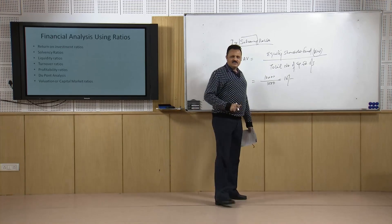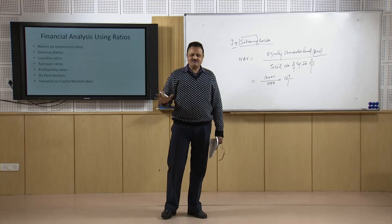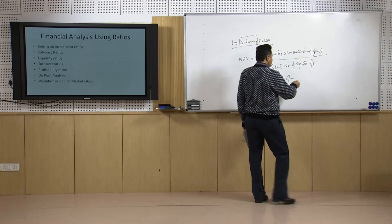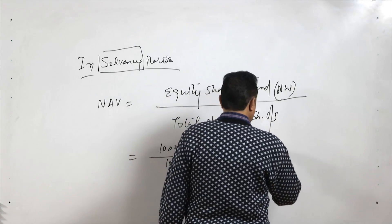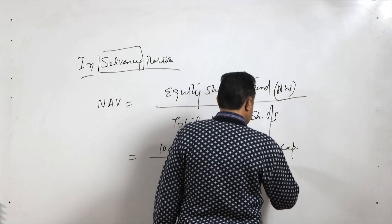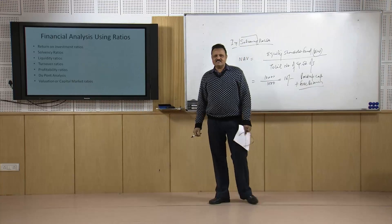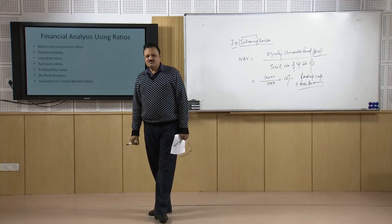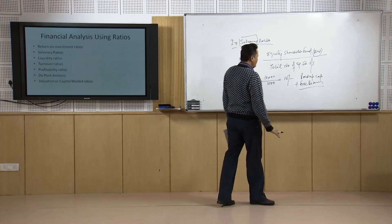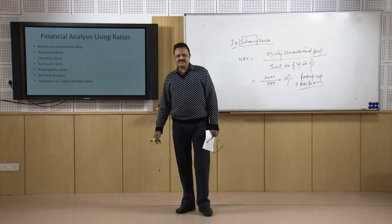There may be a case where the company has only net worth and has not borrowed even a single penny. Net worth is paid-up capital plus free reserves — paid-up capital being capital contributed by the shareholders, and free reserves being reserves available to equity shareholders with no external claims against them.